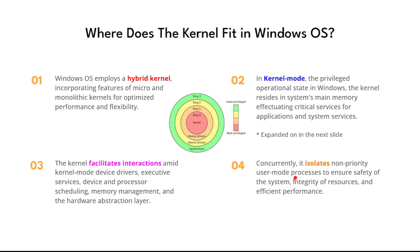The kernel also isolates non-priority user mode processes to ensure system safety — meaning you don't want the system to crash with a blue screen of death. In Linux, everything runs at the kernel level, so if a simple device driver fails the system will likely crash. Windows, because of its hybrid kernel structure, can isolate driver crashes so that for the most part you won't get a blue screen of death — that's a real advantage of the hybrid structure.